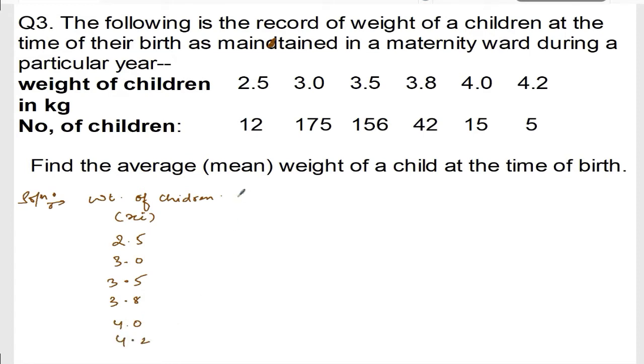What else? Number of children. Number of children, that is FI. Okay, number of children, that is first, it is 12. Second, 175. Third one, 156. Fourth is 42. 15 and 5.